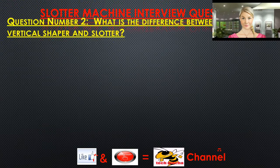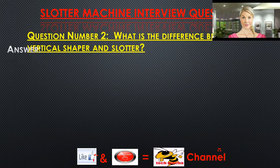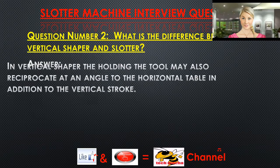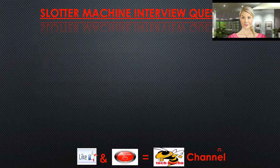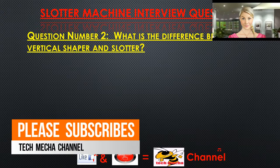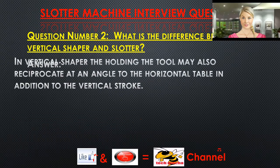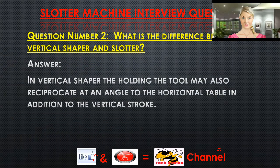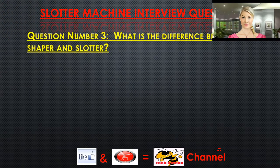Question number two: What is the difference between a vertical shaper and a slotter? Answer: In a vertical shaper, the tool holding may also reciprocate at an angle to the horizontal table, in addition to the vertical stroke.